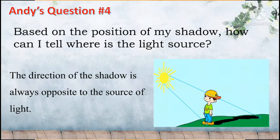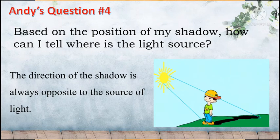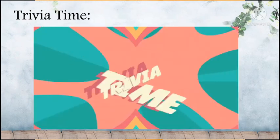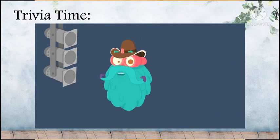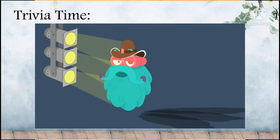For Andy's last question — based on the position of my shadow, how can I tell where is the light source? — as we observed in our two activities, the direction of the shadow is always opposite to the source of light. Trivia time! You can have multiple shadows. It all depends on the number of light sources. The more the number of lights, the more shadows you will have.